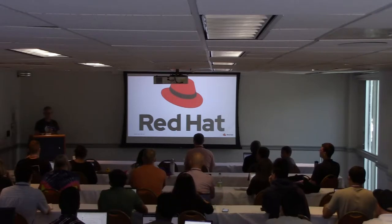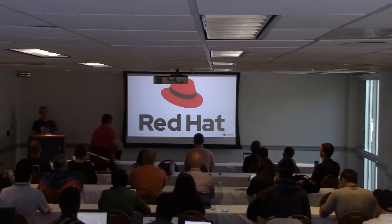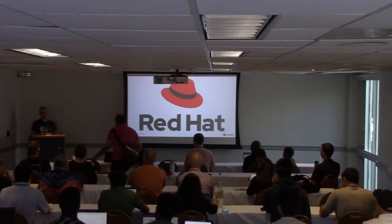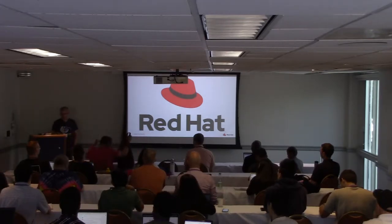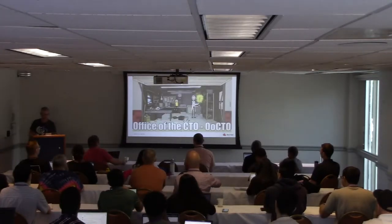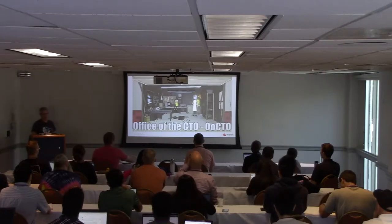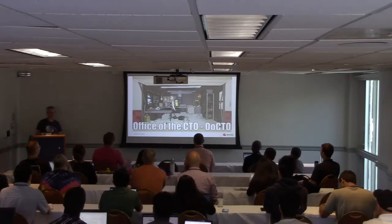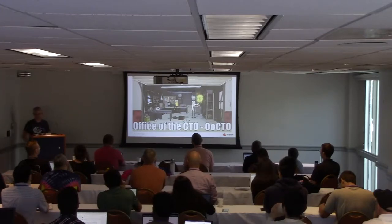This is the logo. I'm working for Red Hat — it's a stealth startup that already did its exit. I'm working in the Office of the CTO, also known as Octo. We do a lot of interesting things, making sure that things don't implode and playing around with new technologies. It looks dangerous, but actually it's a lot of fun.